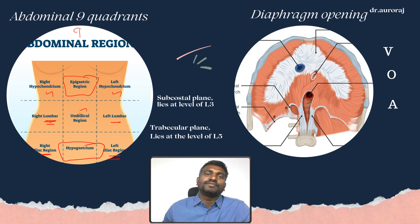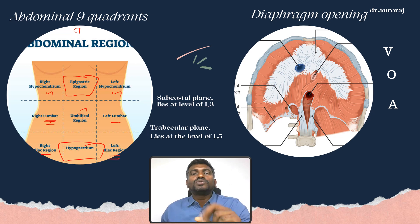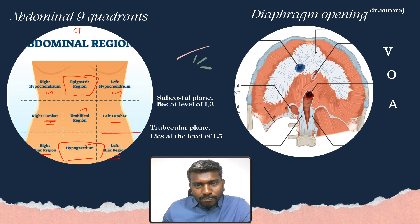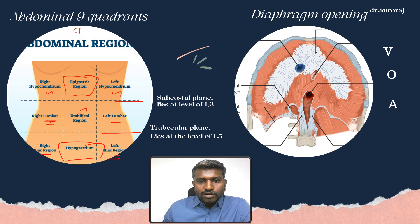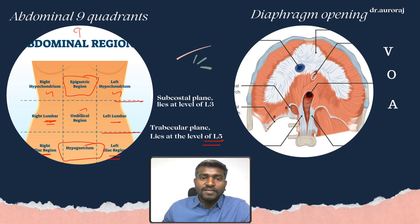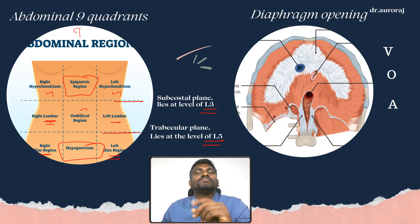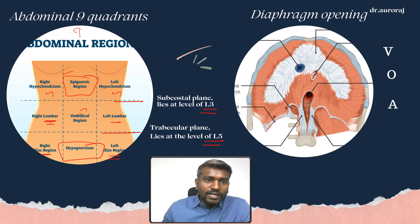For the main exam, remember two important planes: the transtubercular plane lies at the level of L5, and the subcostal plane lies at the level of L3. These two planes are called the mid-clavicular planes.